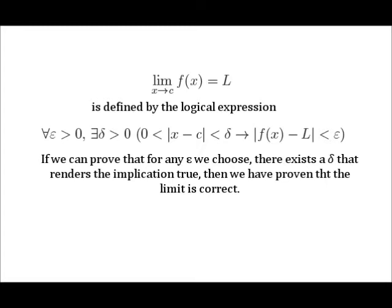For all epsilon greater than 0, there exists a delta greater than 0, such that if the absolute value of x minus c is greater than 0 and less than delta, then the absolute value of f of x minus L is less than epsilon.